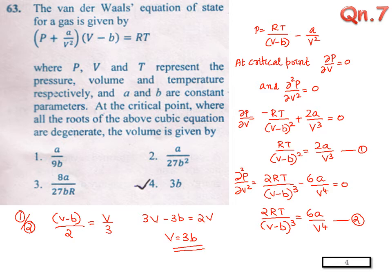So at the critical point, we have to remember that ∂P by ∂V equal to 0 and ∂²P by ∂V² equal to 0. Using ∂P by ∂V equal to 0, we arrive that RT by V minus B all square is equal to 2A by V cube.